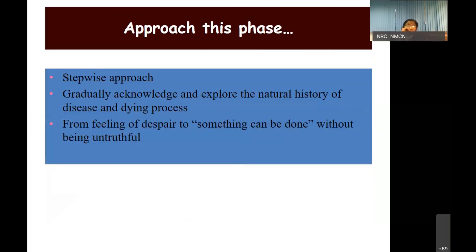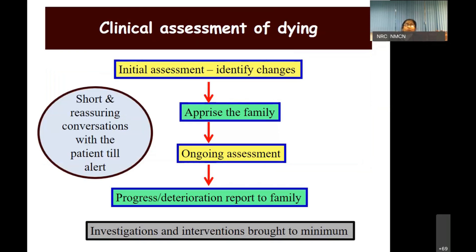Approach this space in a stepwise, gradual manner if time permits. Explain the natural history of the disease and the dying process — perhaps multiple times, to different family members. Address their despondency and despair. Offer what you can without being untruthful: 'We are trying to make him as comfortable as possible.' Your role as a resident is to identify these changes, apprise your seniors and consultant, keep doing repeated assessments, and keep informing the family.